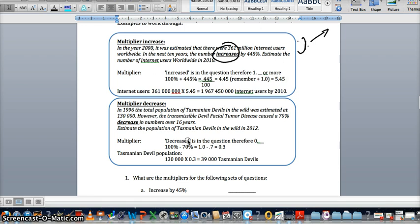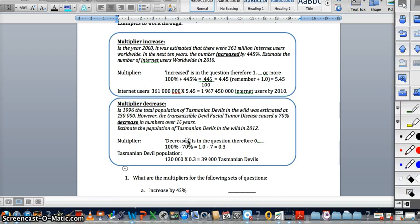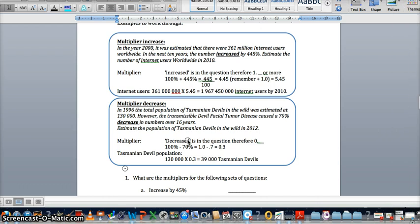Estimate the number of internet users worldwide, so this is your thinking. This is my attempt at your brain. Wow, it's so big. Don't be like that about yourself. So, we are multiplying, the word increase, therefore that's got to happen.